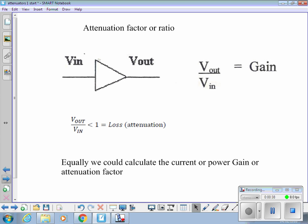If V_out over V_in is less than 1, we're not talking about a gain, we're talking about a loss or attenuation, so a negative gain.